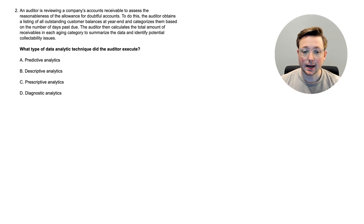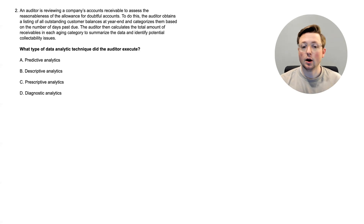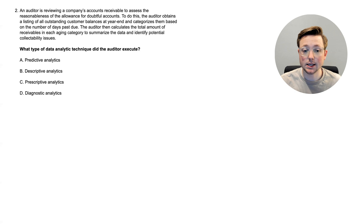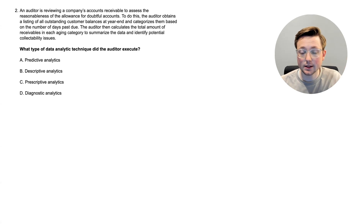Here we are at question two. What type of data analytic technique did the auditor execute? An auditor is reviewing a company's accounts receivable to assess the reasonableness of the allowance for doubtful accounts. The auditor obtains a listing of all outstanding customer balances at year end and categorizes them based on the number of days past due, then calculates the total amount of receivables in each aging category to summarize the data and identify potential collectability issues. Was it A, a predictive analytic; B, a descriptive analytic; C, a prescriptive analytic; or D, a diagnostic analytic?